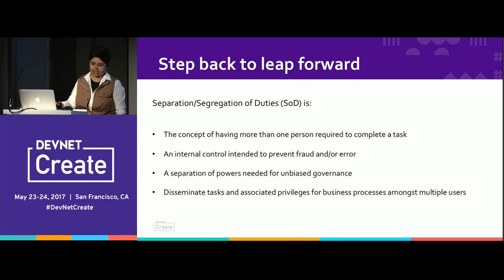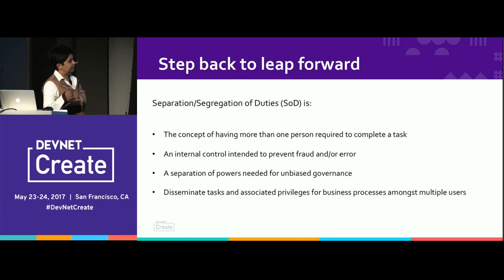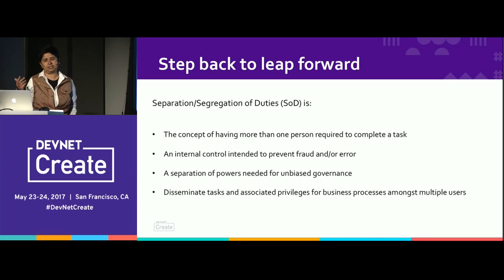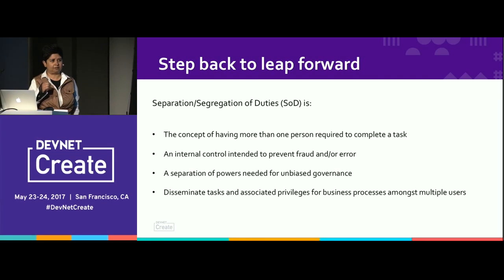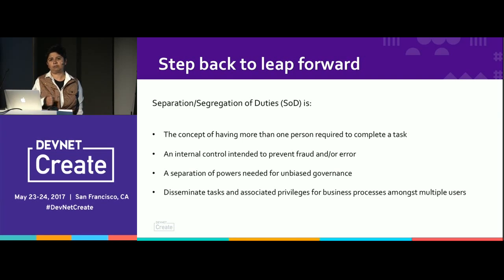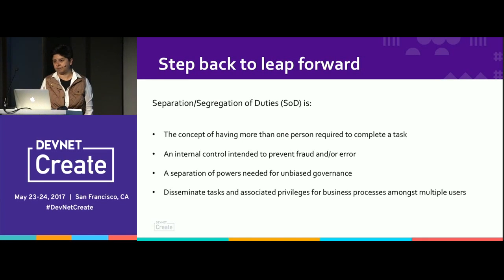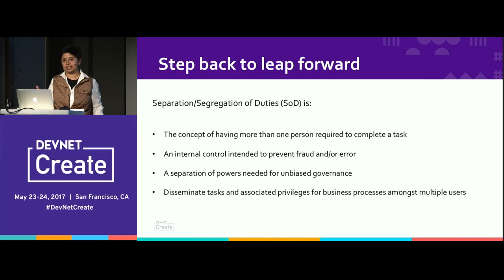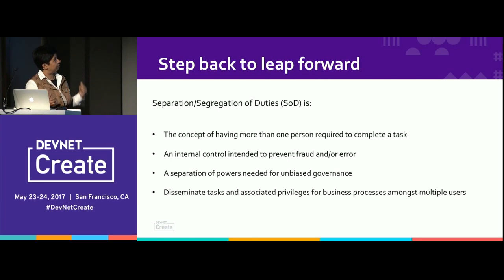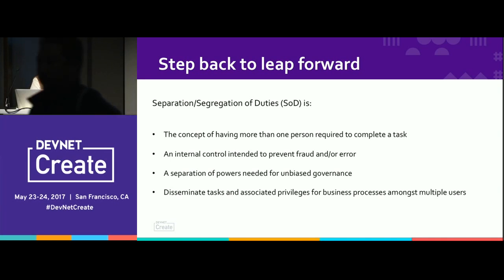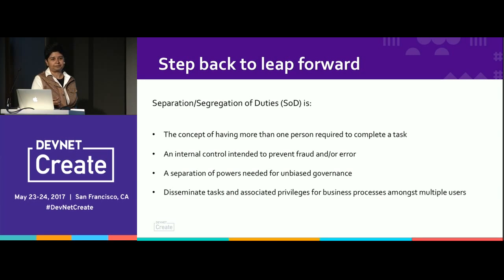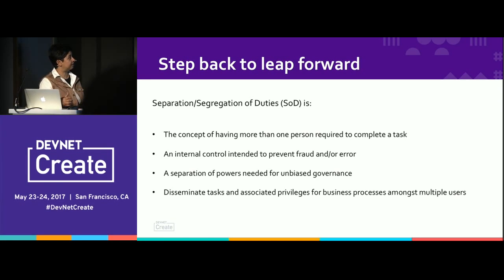The concept of having more than one person required to complete a task — think of a real life example: if you have a joint account, both people need to sign the check before you can withdraw money. There's nothing wrong with it. It relates to internal control intended to prevent fraud and error. They are not doubting one of you; it's just how the process works.